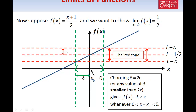So our conclusion is that if we choose delta = 2ε, then we know that f(x) will be within a distance of epsilon from L whenever x is within a distance of delta from 0. Bear in mind, if we know one value of delta works, then any smaller value of delta will also work, because if we make our interval smaller it will still fit between the green lines. So there are infinitely many values of delta that work — it's just a matter of finding one small enough. In this example, delta = 2ε is actually the largest possible value of delta which will work.